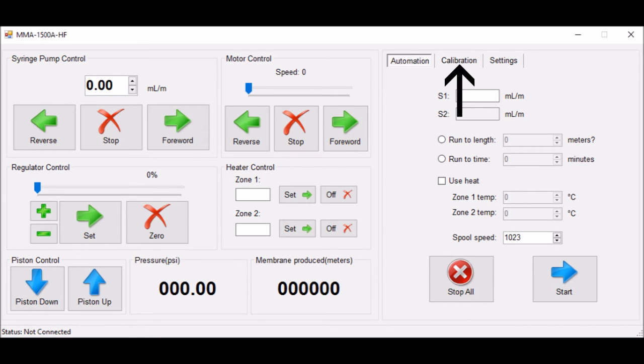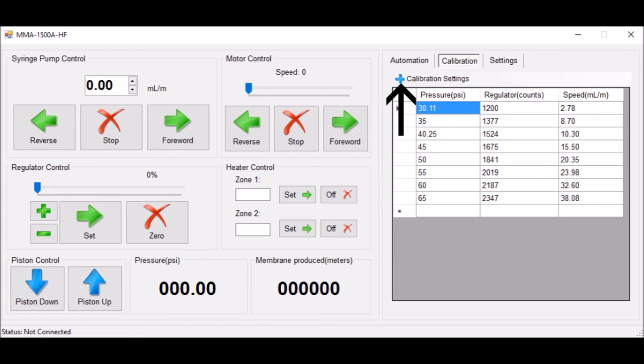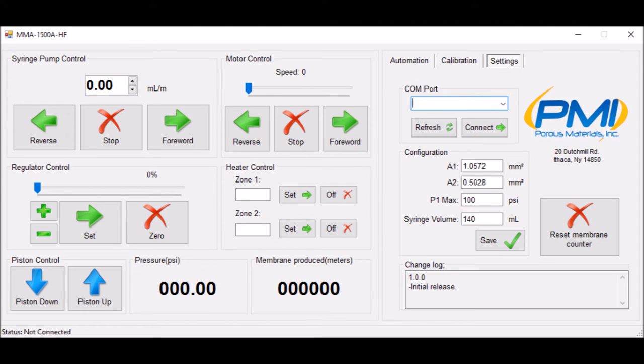If we navigate over to the calibration tab, we can control our calibration settings such as the pressure, the regulator, and the speed. Now we'll navigate to the settings tab, where we can configure and save our syringe pump settings and connect to the machine.